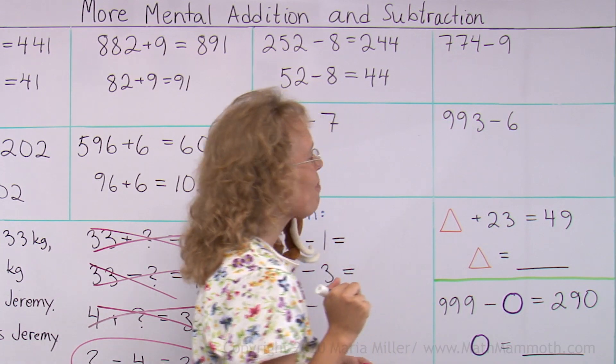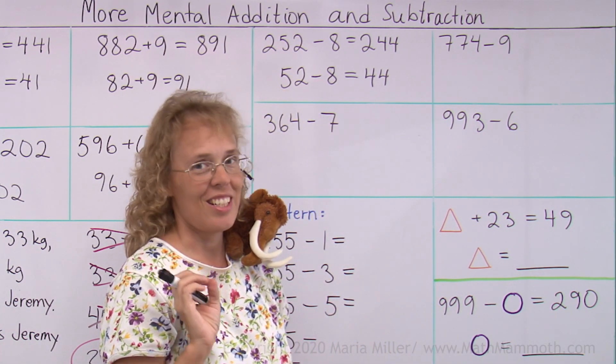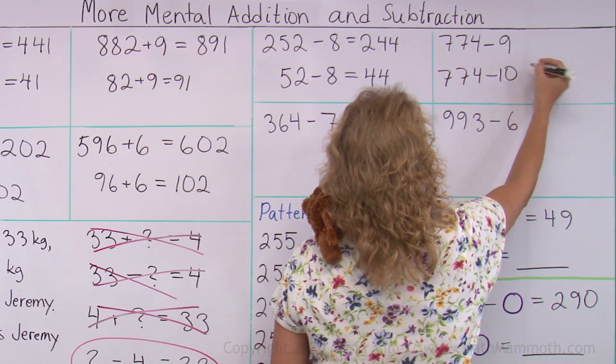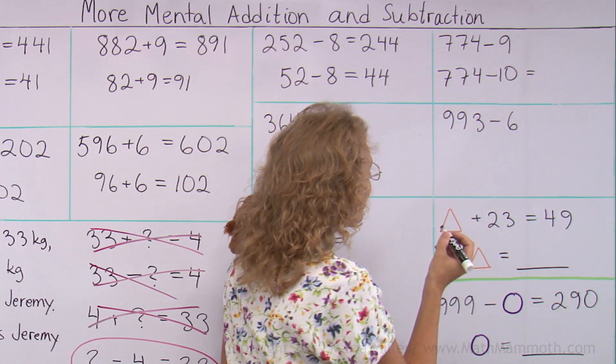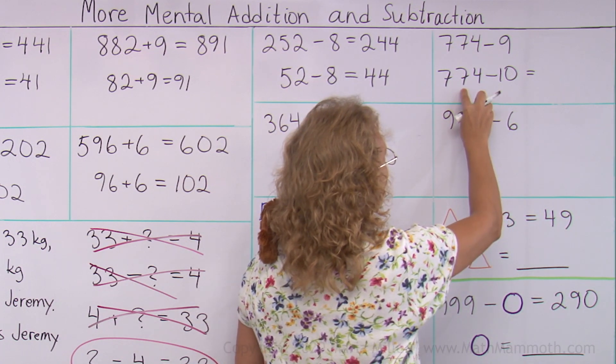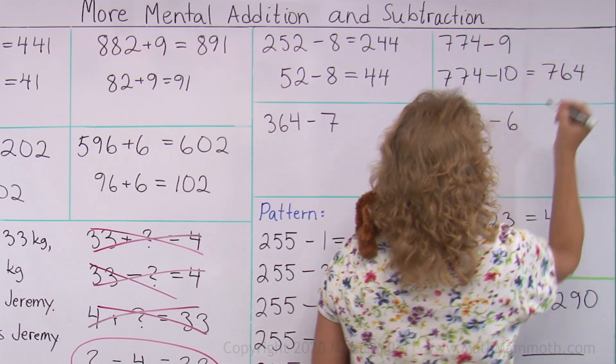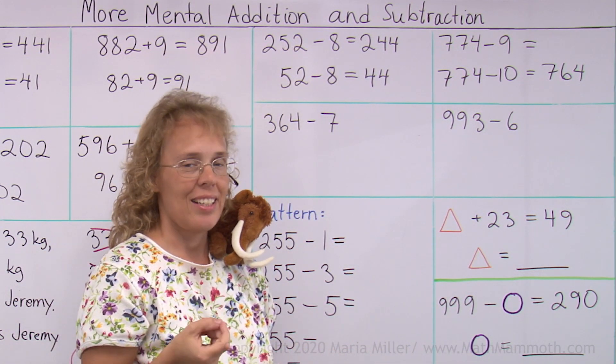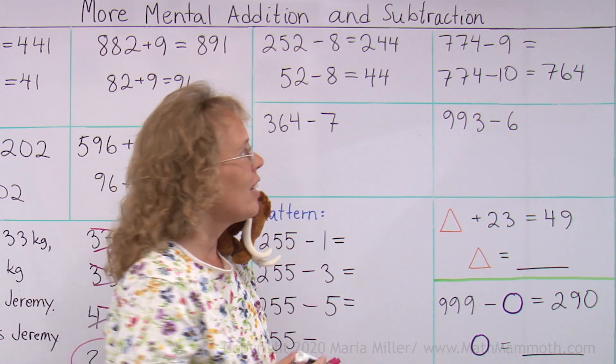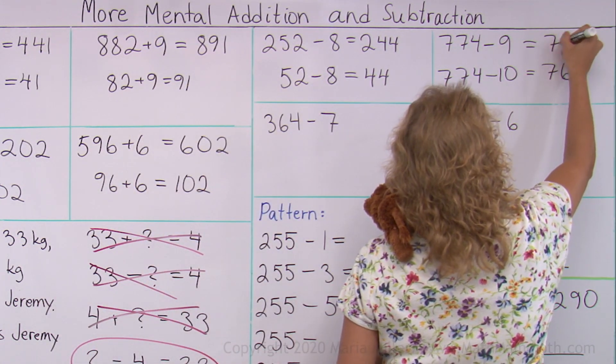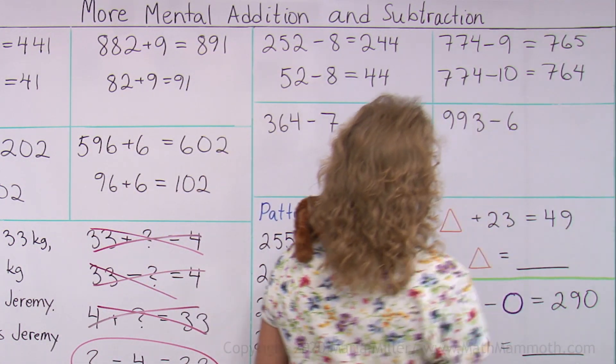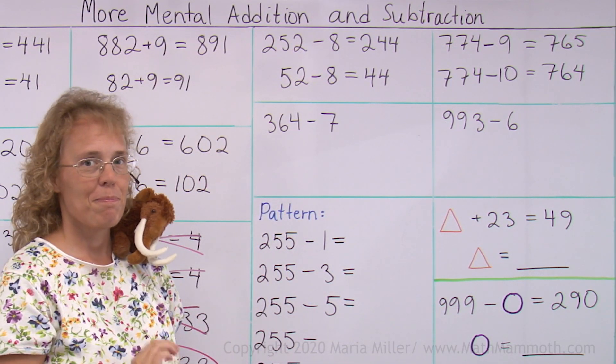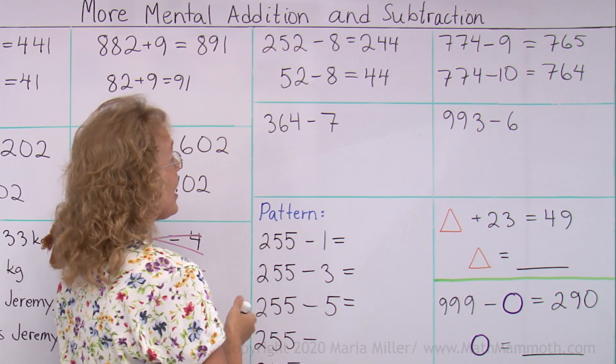774 minus 9. Over here, let's use a different kind of helping problem. Since 9 is so close to 10, then I like to do it this way. 774 minus 10. That's 7 tens. Take away 10. 764. And now, I subtracted 10. So I subtracted 1 too much. So the answer to this one is 1 more than this answer. 765.